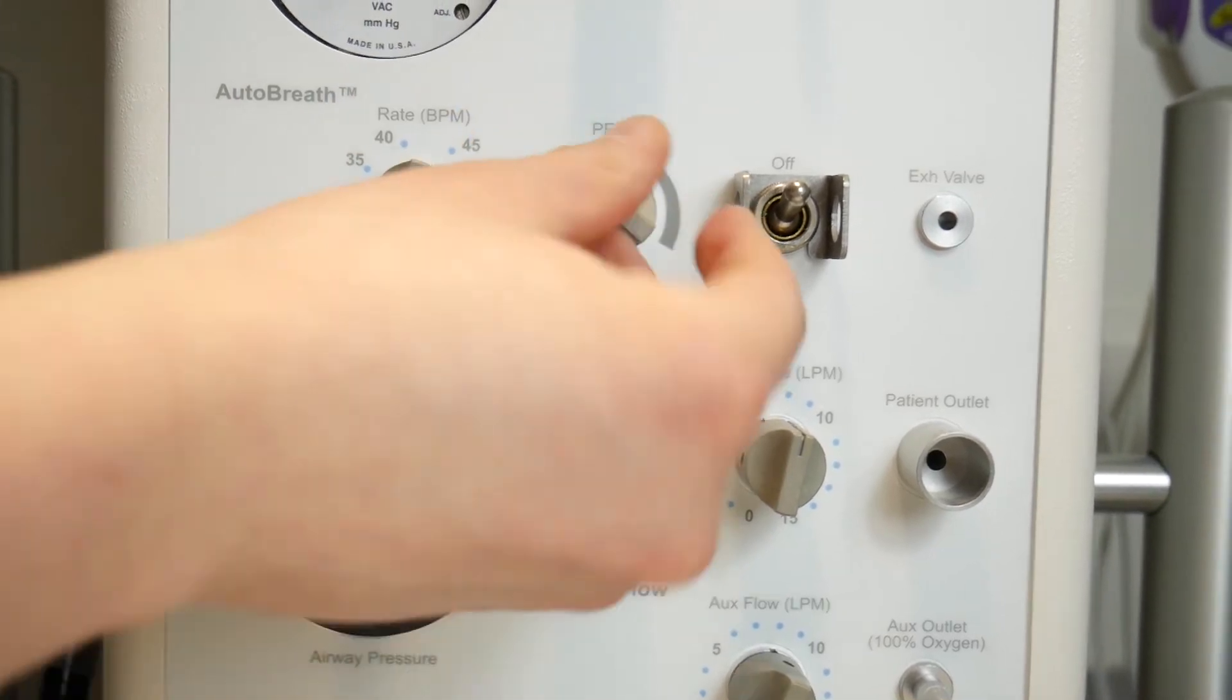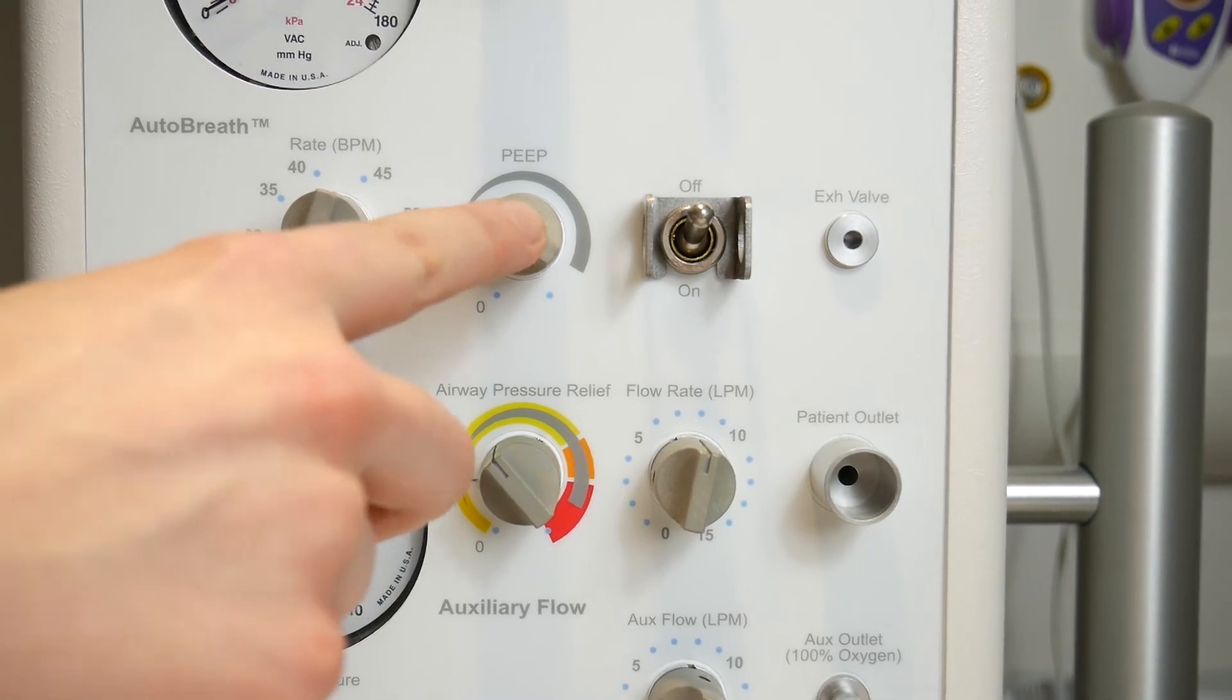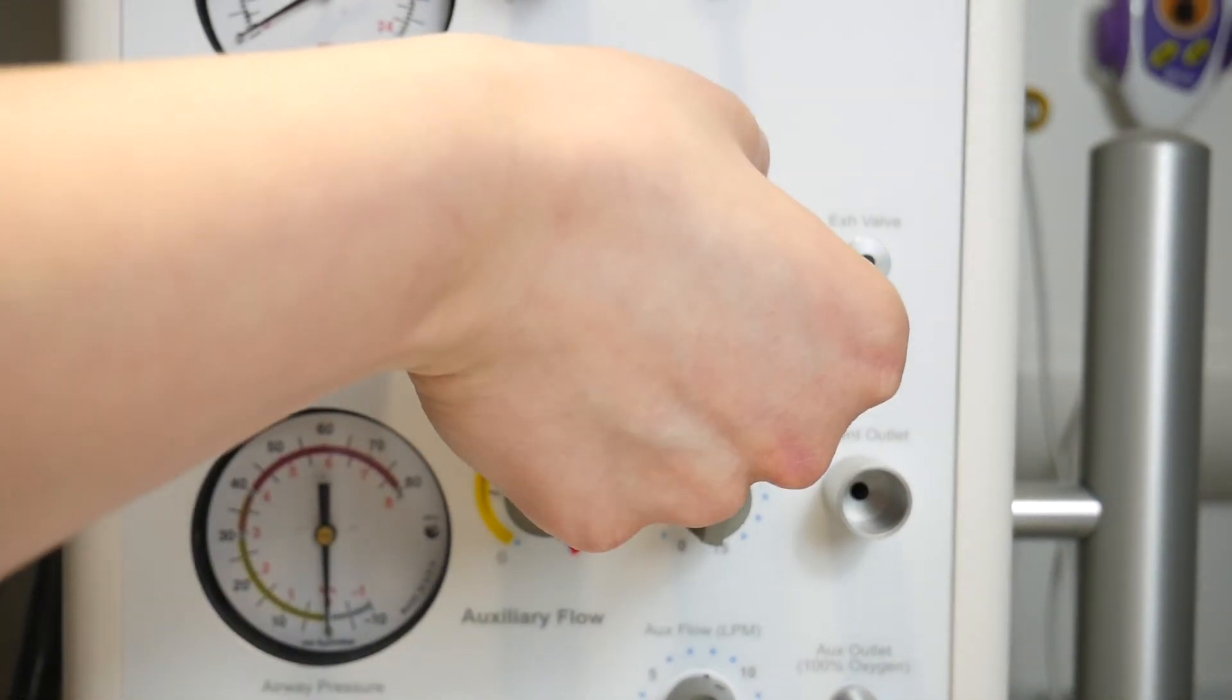If you're not setting the PEEP with the valve on top of the T-piece device, you can set it here. And to the right you have the on-off switch that you turn on whenever you're using the auto breath.